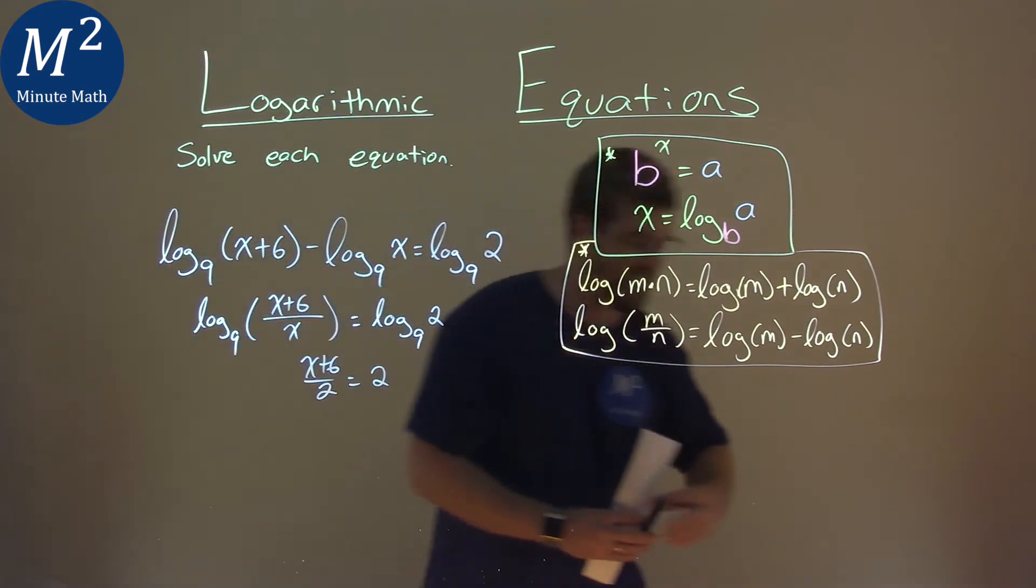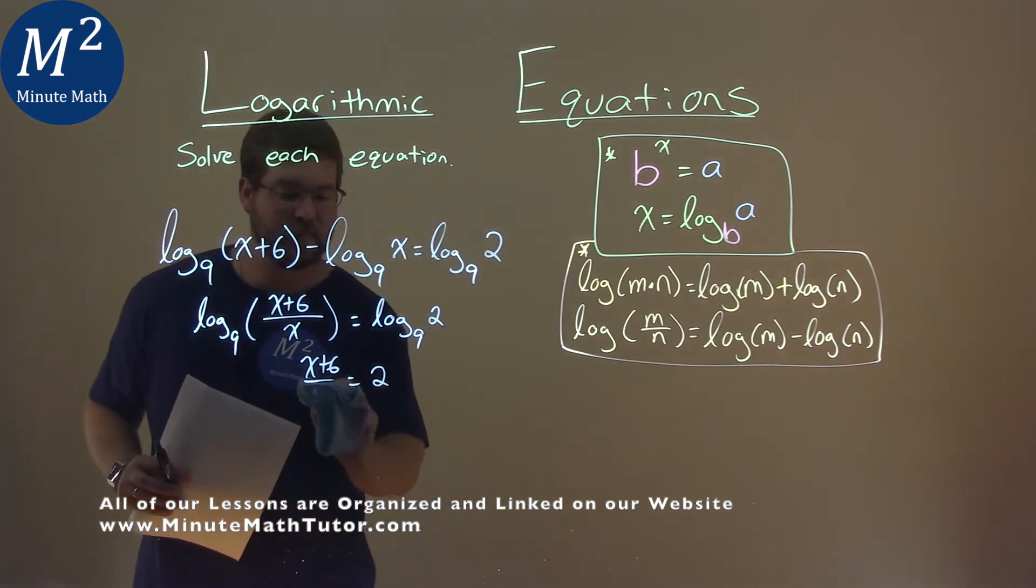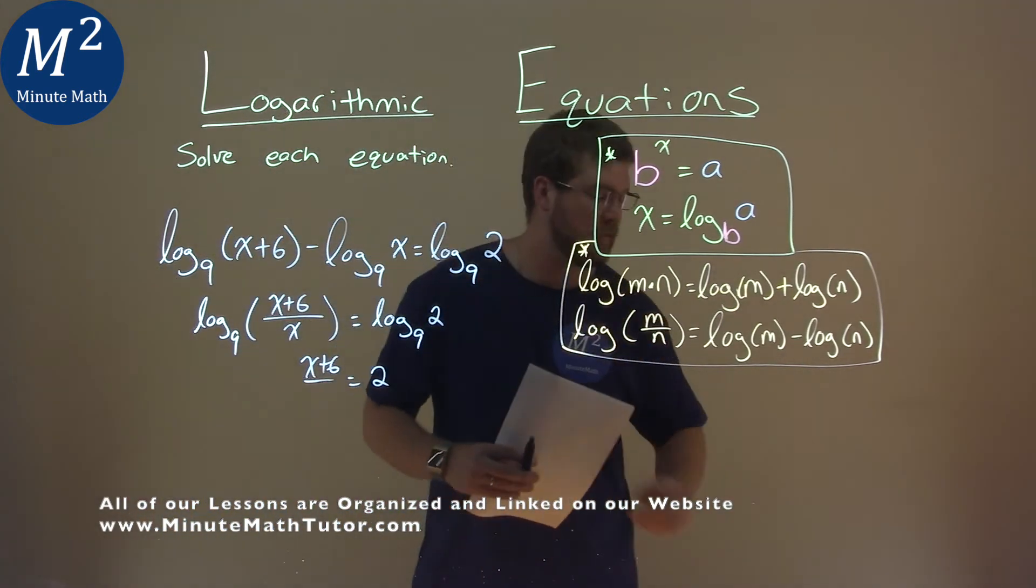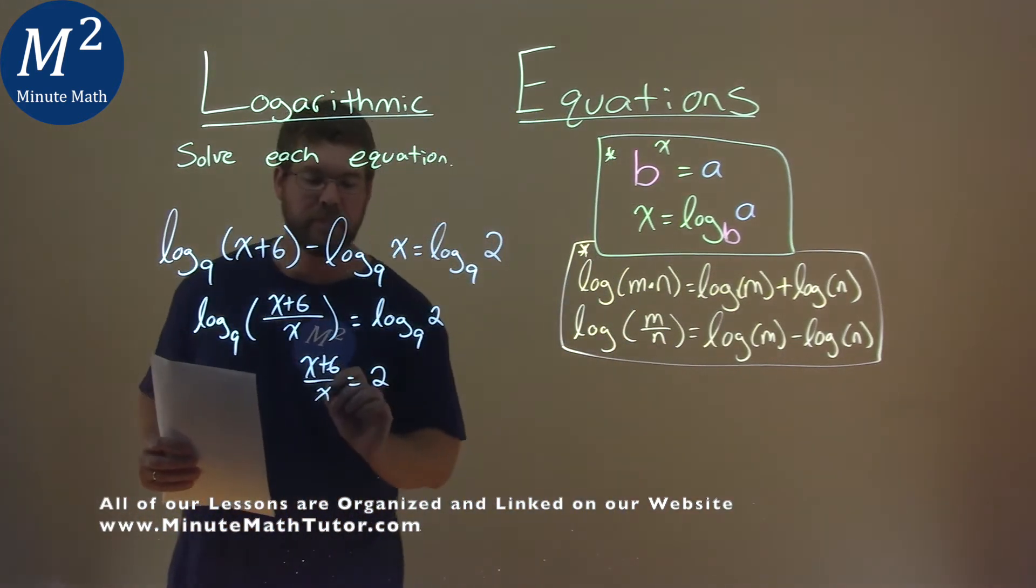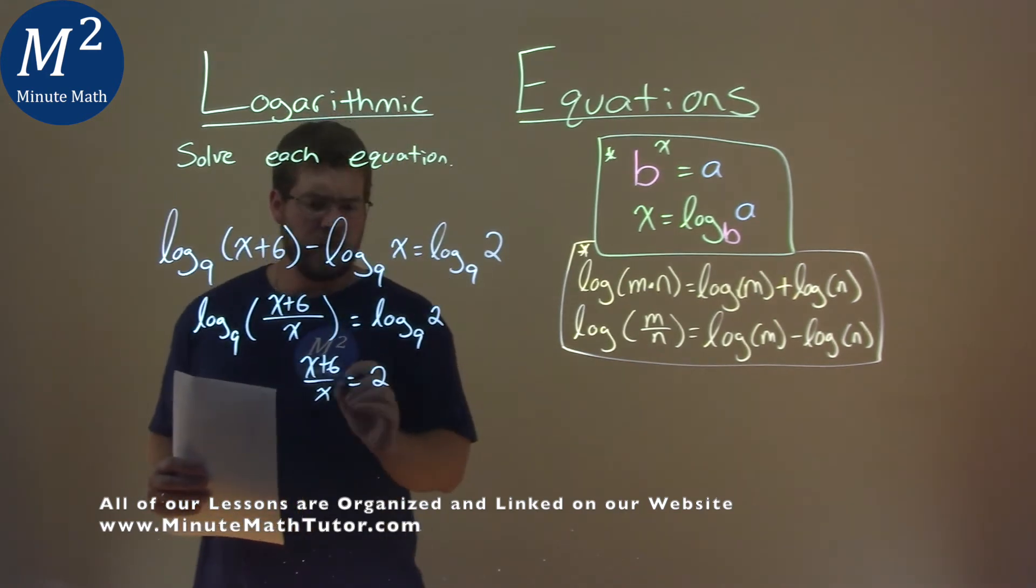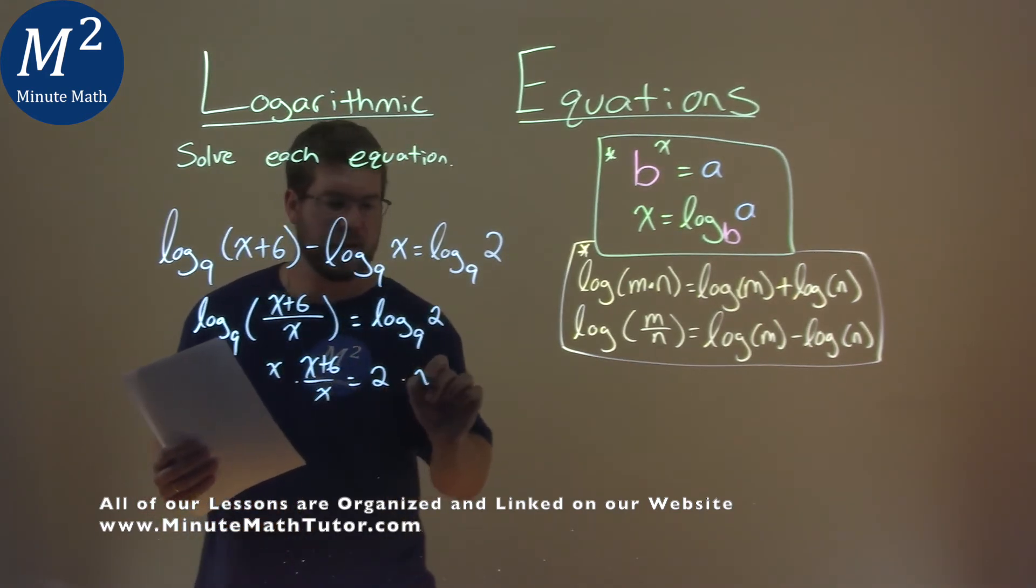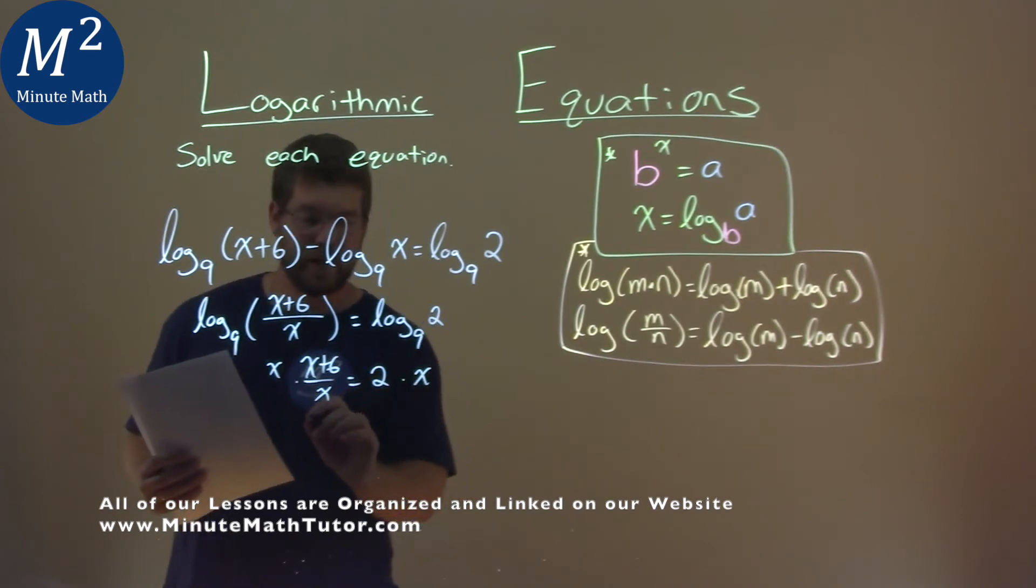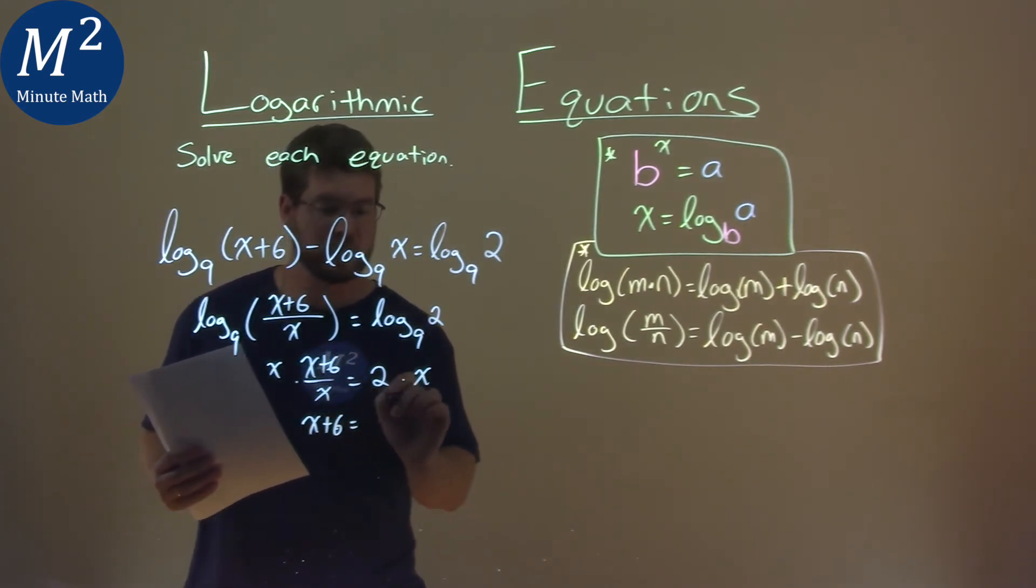Sorry, x plus 6 over an x. If you caught that, let me know down in the comment section. All right, well, to do that and multiply, to solve this, multiply both sides by an x. And so I have x plus 6 equals 2x.